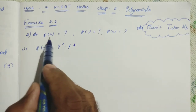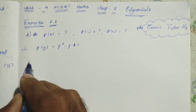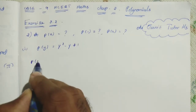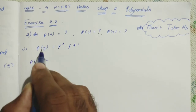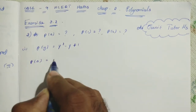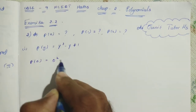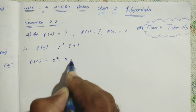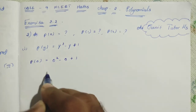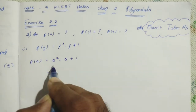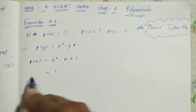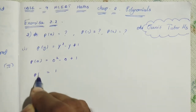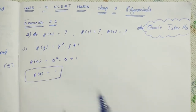First, we should find P of 0. P of 0 means, instead of the y value, you can put a 0. So: 0 squared minus 0 plus 1. 0 squared is 0, 0 plus 1 equals 1. So P of 0 value is 1.